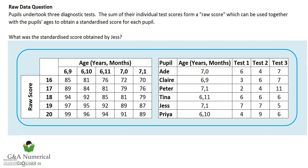It looks a bit difficult because you've got two separate tables and quite a lot of numbers, but let's start with the question itself. The question mentions a pupil called Jess, so we find her in this table here. She is seven years and one month of age, and we've got those individual test scores. Going back to the top, it says the sum of those scores forms a raw score, so the first thing we're going to do is calculate the sum.